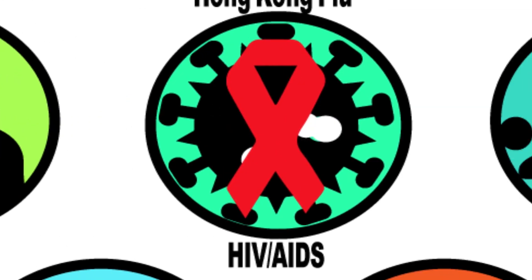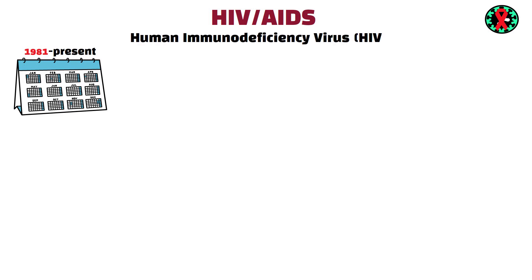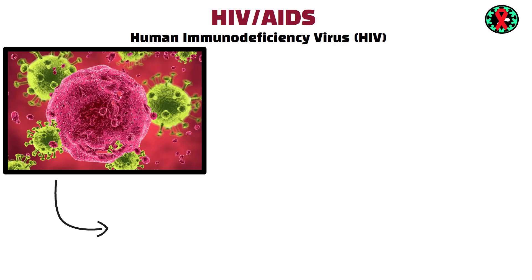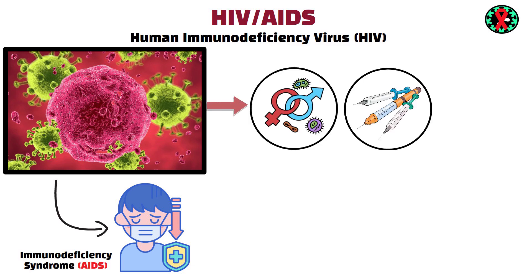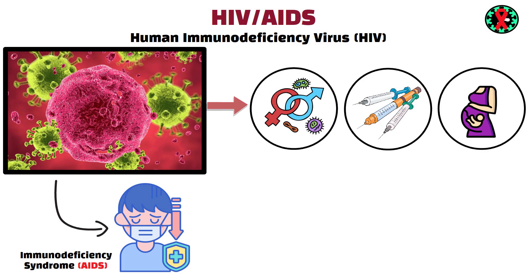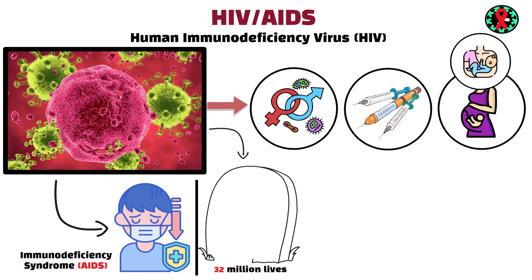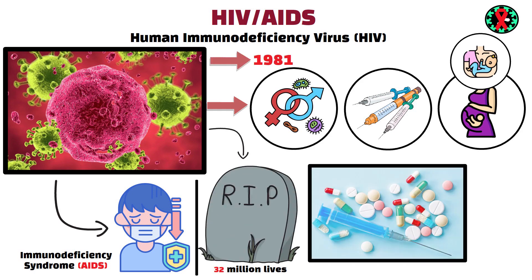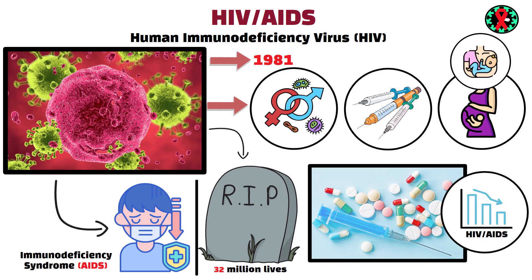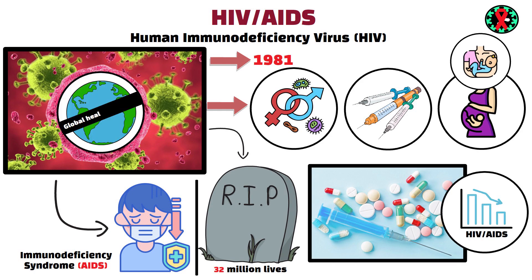HIV-AIDS, 1981. Human immunodeficiency virus, HIV, is a retrovirus that attacks the immune system, leading to acquired immunodeficiency syndrome, AIDS, if left untreated. Transmitted through sexual contact, contaminated needles, or from mother to child during pregnancy or breastfeeding, HIV-AIDS has claimed over 32 million lives since its identification in 1981. While antiretroviral therapy has greatly improved outcomes, HIV-AIDS remains a major global health challenge, particularly in sub-Saharan Africa.